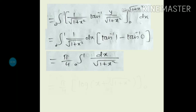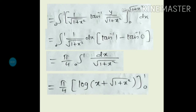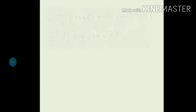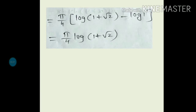This is again in the form of a standard formula, giving log(x + √(1 + x²)). Substituting the limits: upper limit x = 1 gives log(1 + √2), and lower limit x = 0 gives log(1) = 0. So the final answer is π/4 · log(1 + √2).